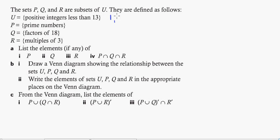U is positive integers less than 13. So what I like to do is just number these. That's going to be 1, 2, 3, 4, 5, 6, 7, 8, 9, 10, 11, and 12.